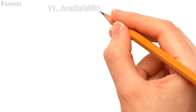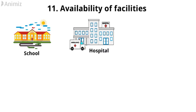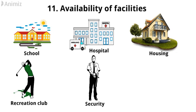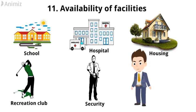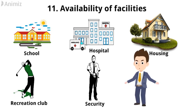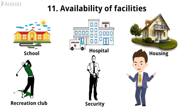Number 11: Availability of facilities. Availability of basic facilities such as schools, hospitals, housing, recreation clubs, security, etc. can motivate the workers to stick to their jobs. Success of an industry depends very much on the attitude of its workers, so while selecting the plant location, the organization must give preference to other facilities also.